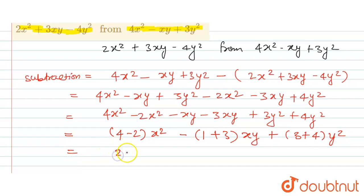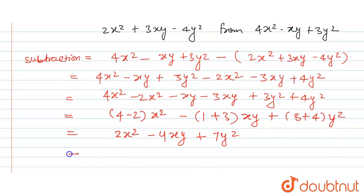4 minus 2 equals 2, so 2x². Minus 1 minus 3 equals minus 4, so minus 4xy. And 3 plus 4 equals 7, so 7y². This can be written as 2x² + 7y² - 4xy. This is the final answer for this question. Thank you.